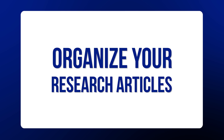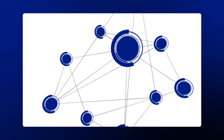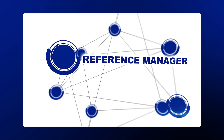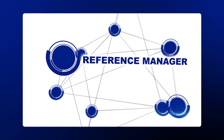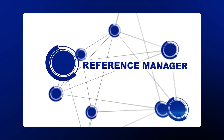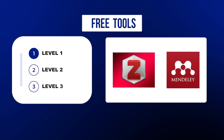Once you have a tool that allows you to find literature, you want to be able to organize your research articles effectively so you can always find them in the future. Just downloading a bunch of PDFs and saving them in a folder isn't going to be the most productive way to do this. So I recommend at the very minimum that you have a reference manager. Level one is our free reference managers, which includes Zotero and Mendeley as examples.